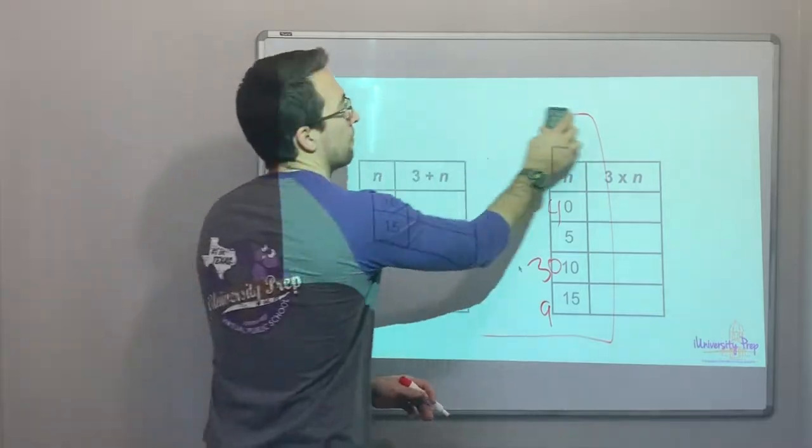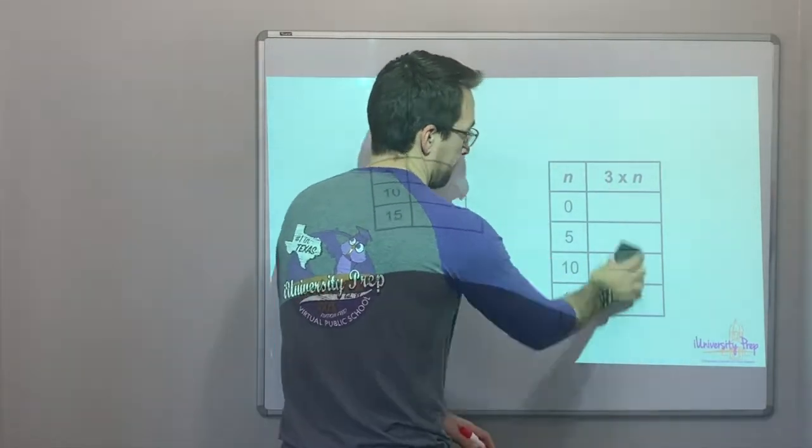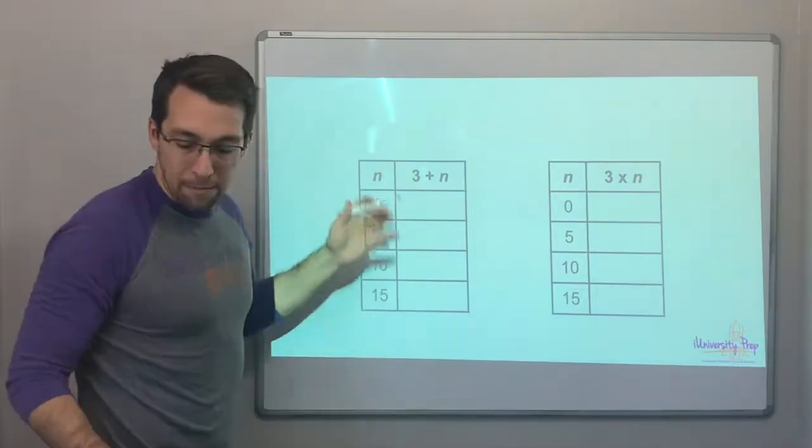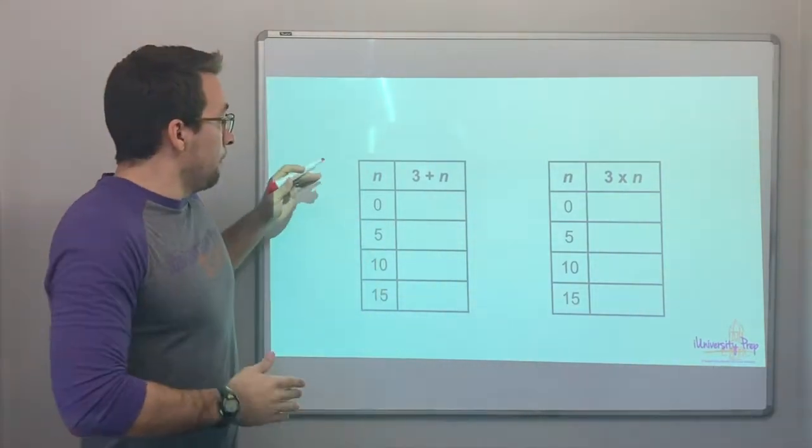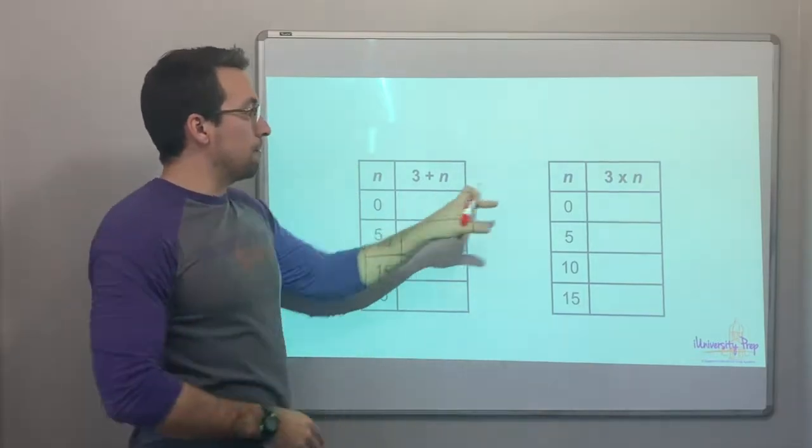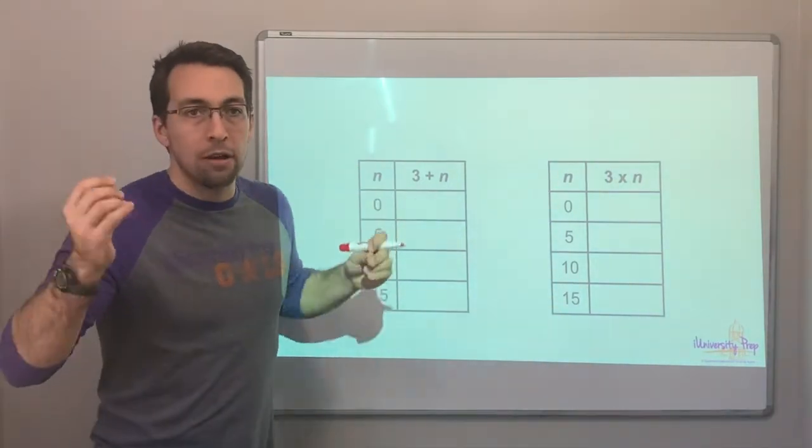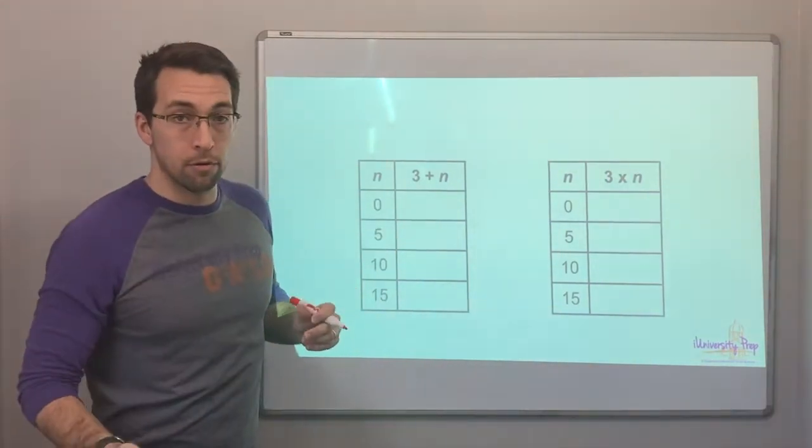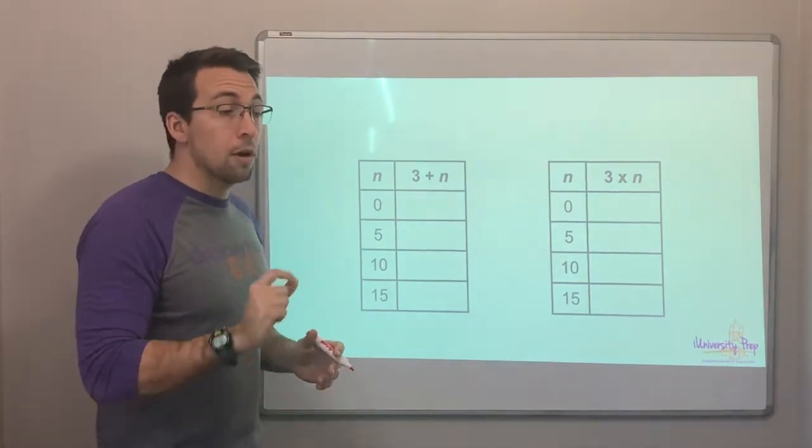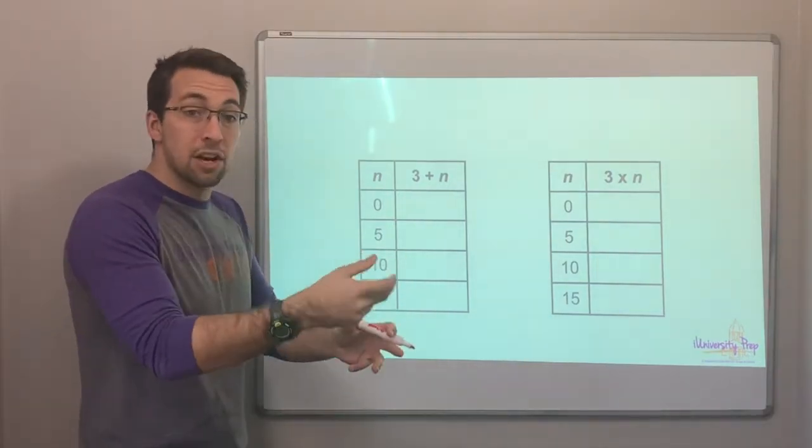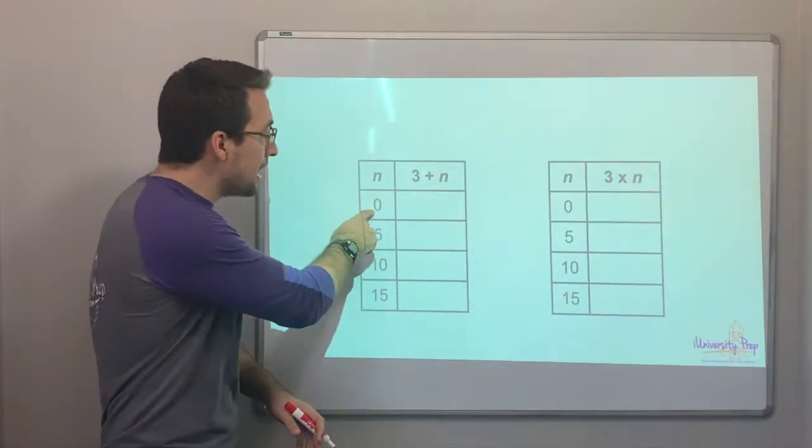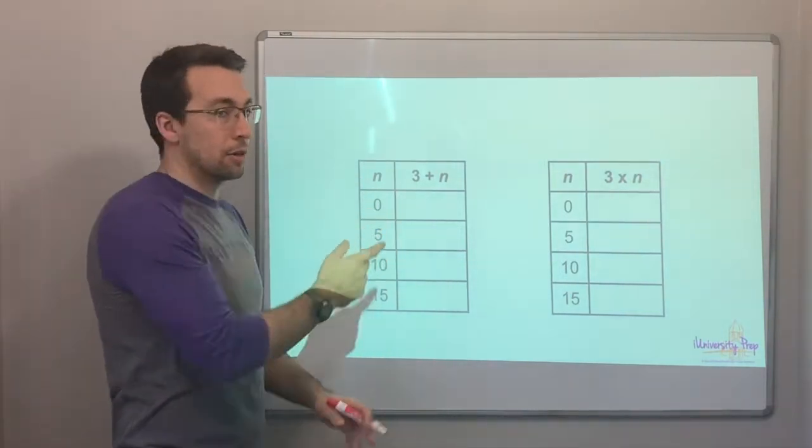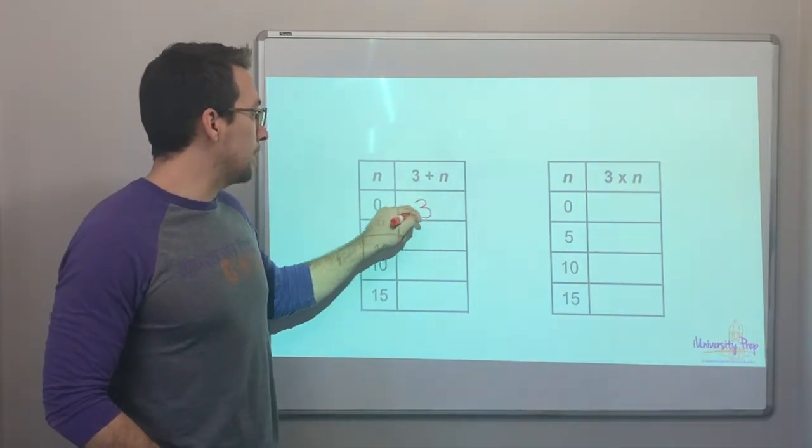All right. Now check this out. This is a pretty frequent type of question on StarTest and definitely what the lesson's about. Here it gives us a list of values, a list of the value for n. n is our variable. And a variable, we have to remember, a variable is a letter that represents a number, and that number can change. So when n is zero, what is this? Three plus zero. Oh, that's three.